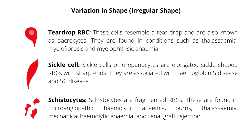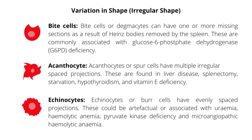Schistocytes are fragmented red blood cells. These are found in microangiopathic hemolytic anemia, burns, thalassemia, mechanical hemolytic anemia, and renal graft rejection. Bite cells or degmacytes can have one or more missing sections as a result of Heinz bodies removed by the spleen. These are commonly associated with glucose-6-phosphate dehydrogenase deficiency.